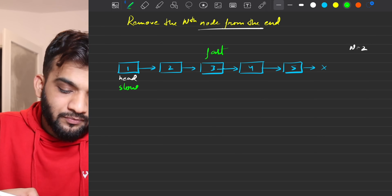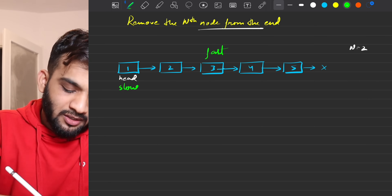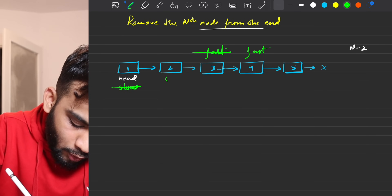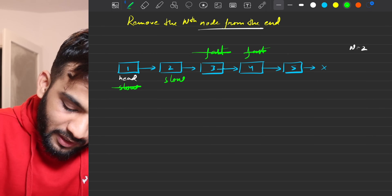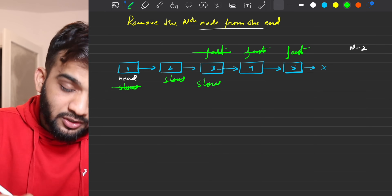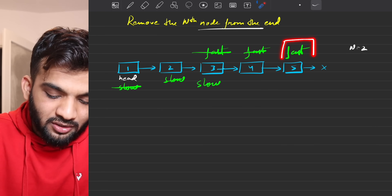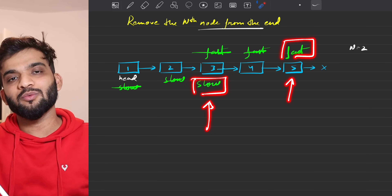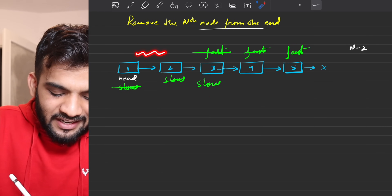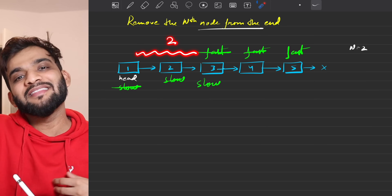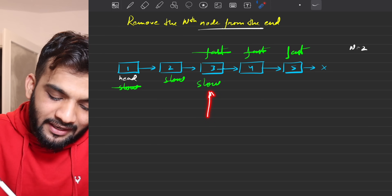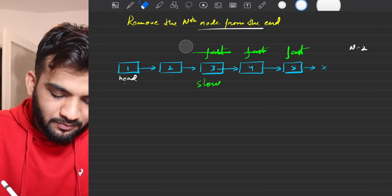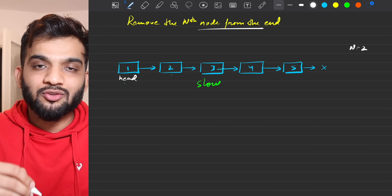After positioning the fast pointer, we introduce a slow pointer at the head and move both simultaneously one step at a time. When fast reaches the last node, slow will be pointing to the previous node — exactly where we need to be.